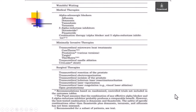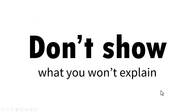I would never show a slide with such a long list, because I know I would never be able to explain all the points, nor would the audience want to read everything on the slide. If I want to talk about three points, I will just have those three points and the rest goes in as a handout. So if you want to make slides instead of documents, never show anything on your slides that you wouldn't explain personally.